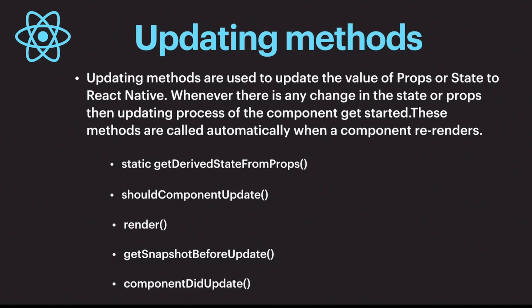Here is the list of the updating methods. Updating methods are used to update the value of props or state in React Native. Whenever any change in the state or props occurs, the updating process of the component gets started. These methods are called automatically when a component re-renders. The first method is `getDerivedStateFromProps`, which is also used in the mounting methods but is included in the updating methods list as well.